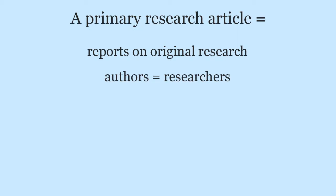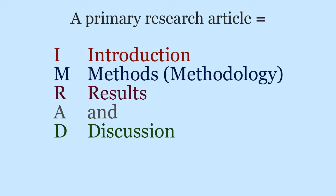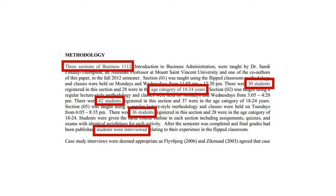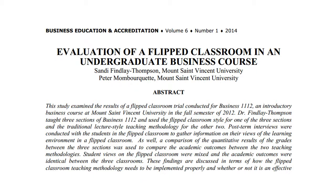The authors of a primary research journal article are the people who conducted the research. These articles are usually structured in a standard format called MRAD, which stands for the sections of the article: Introduction, Methods, Results, and Discussion. For example, the Methods or Methodology section describes the participants in the study, the sample size, and the research procedure used. While these articles usually start with a brief literature review of similar research, the rest of the article focuses on the author's original research.